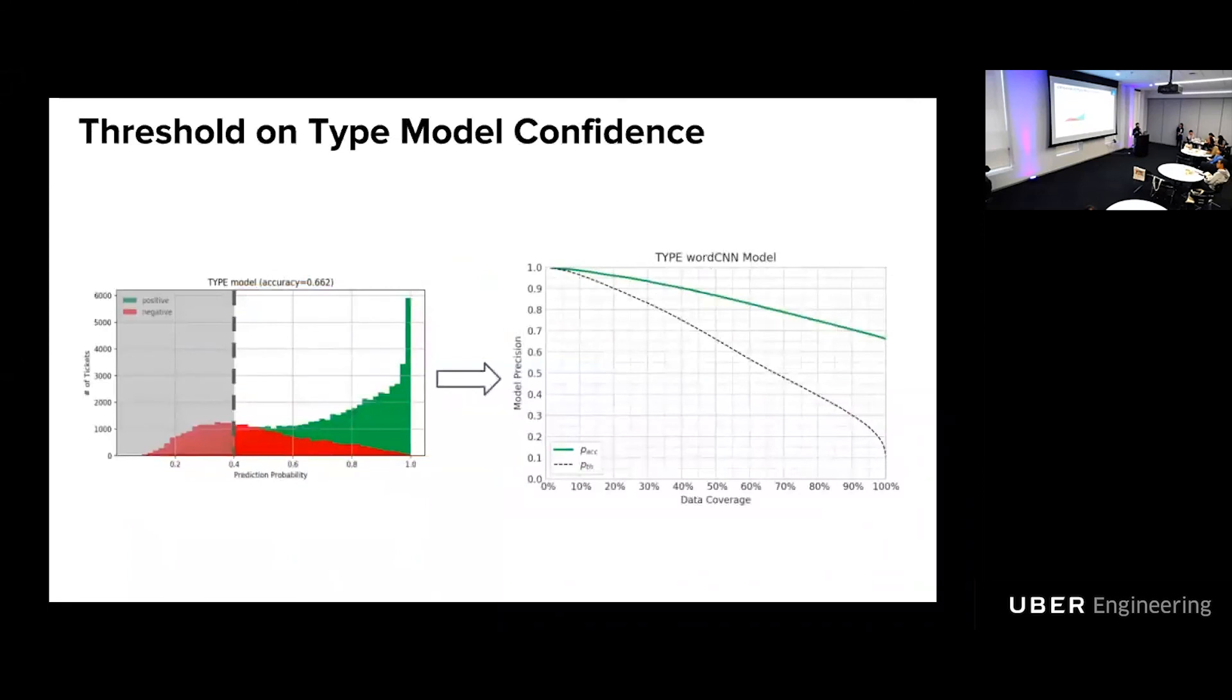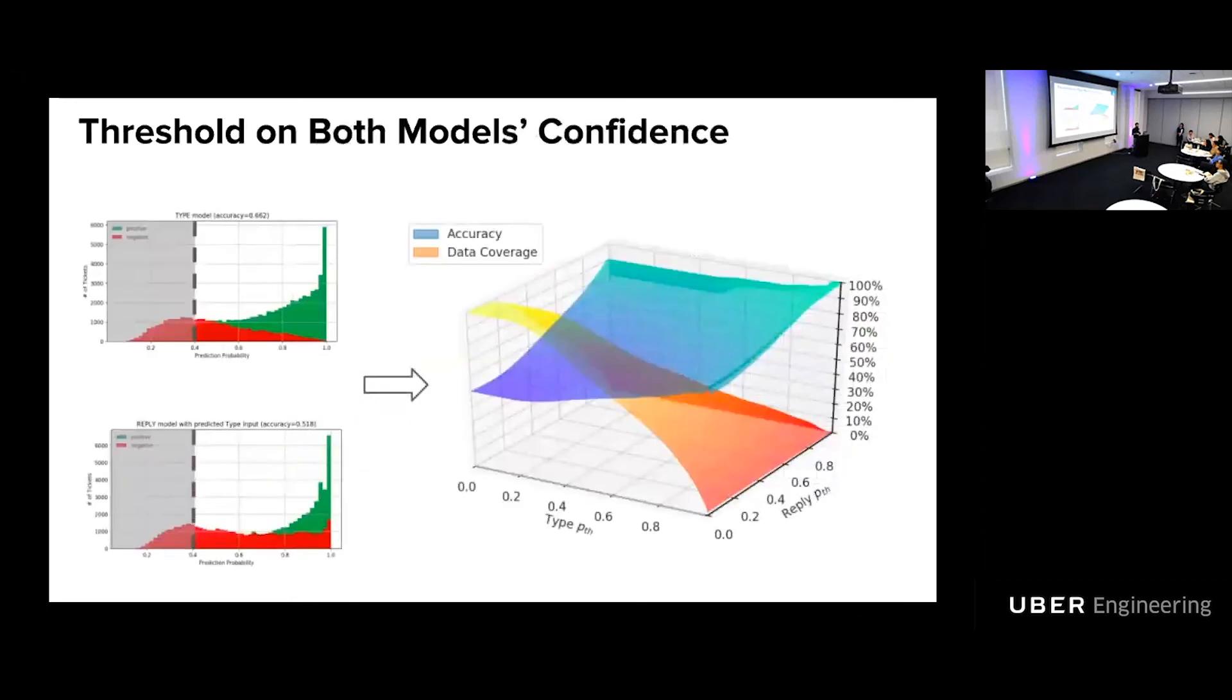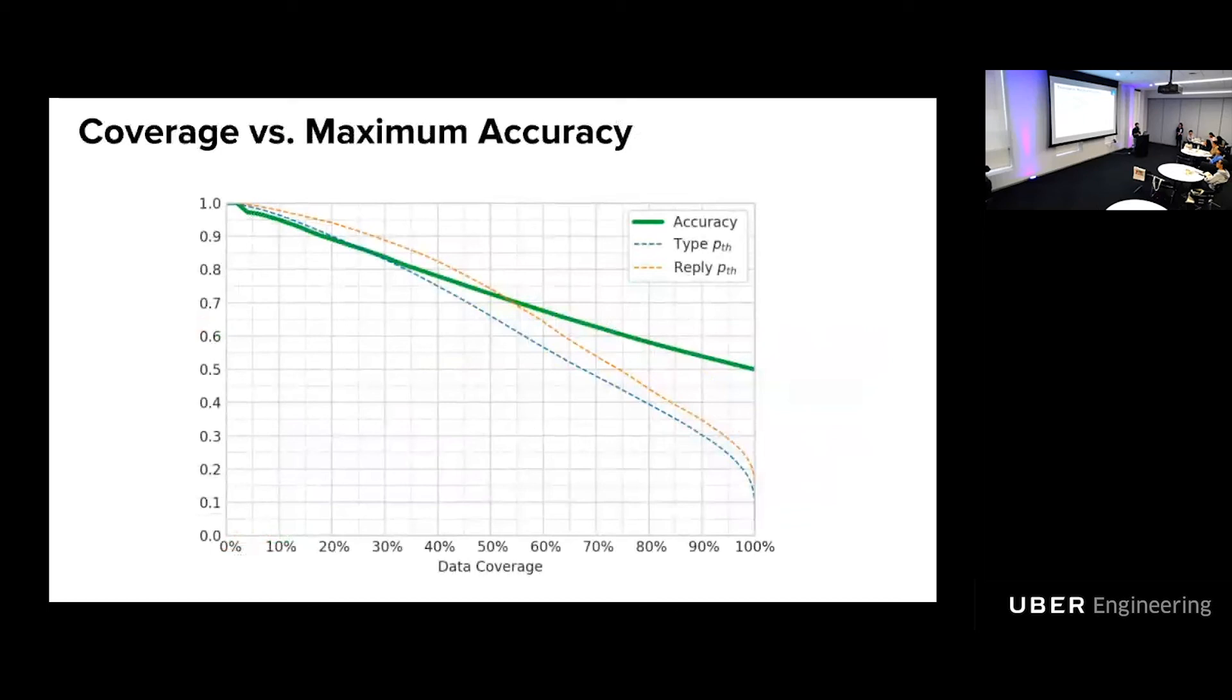And if we plot the distribution of correct and wrong predictions over the probability of the classification of the model, we can see that most of the correct predictions have really high probability from the model. So we can apply a threshold and see how it sweeps through our data set. We can decrease the amount of coverage of our data and increase the accuracy. If you do it both for contact types and for replies, we have these 3D surfaces where we can slice, for instance, the coverage surface, project it to the accuracy surface and identify the best accuracy we can have for that amount of data. If we plot it on a single plot, we can see that if we decrease the amount of coverage, so we cover less tickets, but we can get much more accurate. In particular, these two points are really important because we can get 95% accuracy on 10% of the tickets and 90% accuracy on 20% of the tickets.